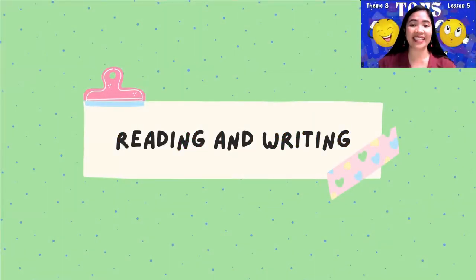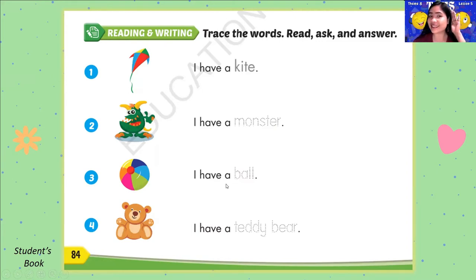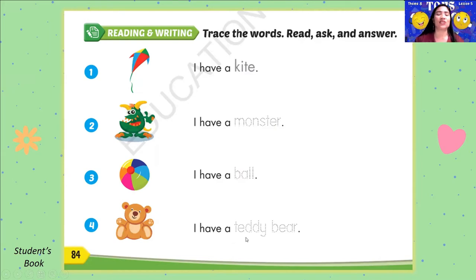Reading and writing. Trace the words, read, ask, and answer. Number 1 is an example for you: I have a kite. What about number 2? I have a monster. Very good. Now trace the word 'monster.' Number 3: I have a ball. Now trace the word 'ball.' Number 4: I have a teddy bear. Trace the words 'teddy bear.' Good job!